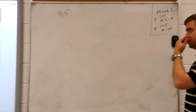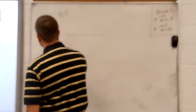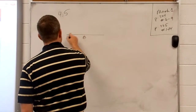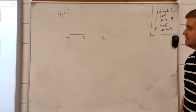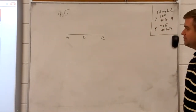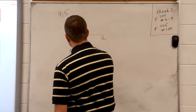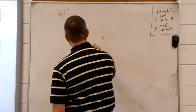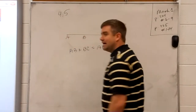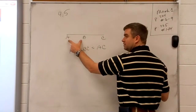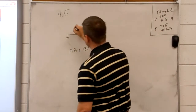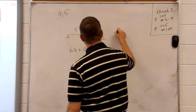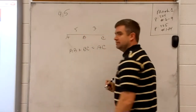The segment addition postulate is very easy. It says if B is in between A and C, then AB plus BC is equal to AC. That's intuitive — this amount plus this amount equals the total amount. For example, five and three: AC is equal to eight.